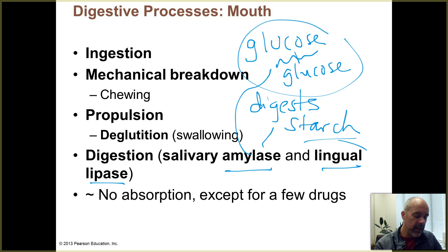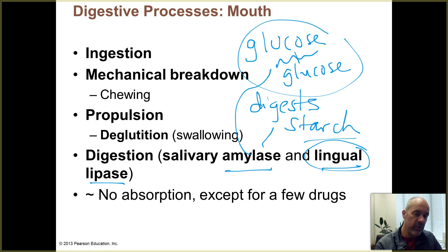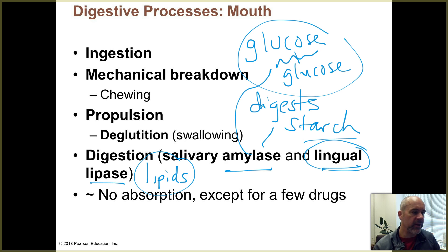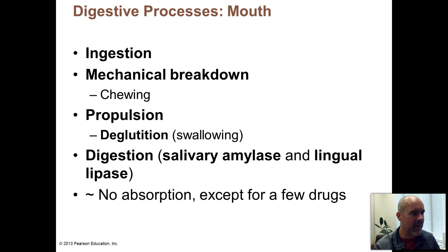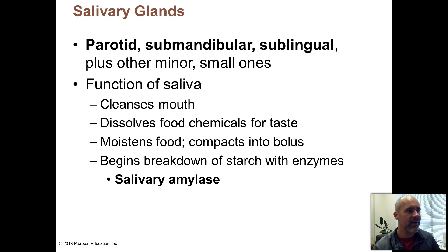Lingual lipase — lingual refers to the tongue, so the tongue is the source of this enzyme. Lipases are going to break down lipids, starting the process of helping you break down those lipids into absorbable molecules. You don't absorb nutrients in the mouth. There are a few drugs that can be absorbed through the lining of the mouth, but in terms of foods that we're eating, they're not absorbed there.